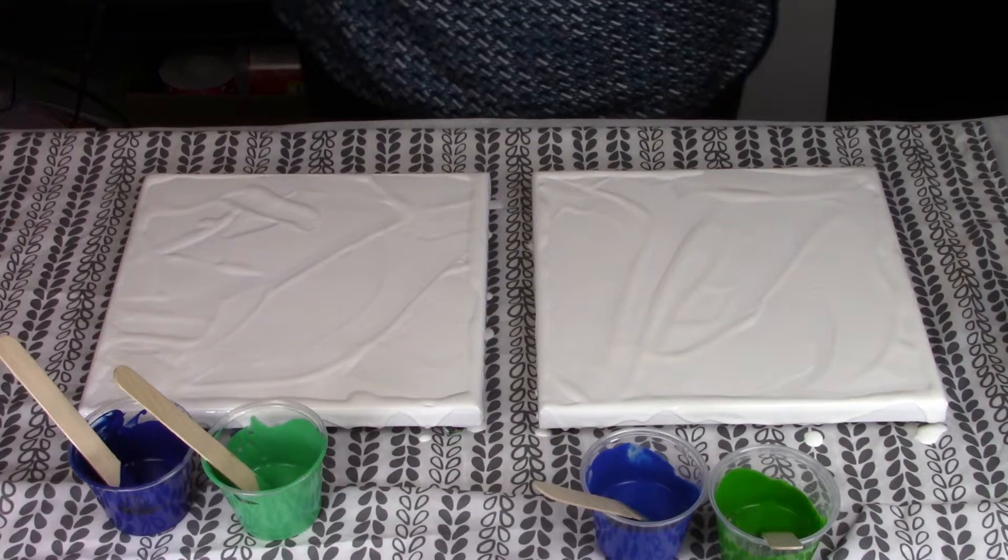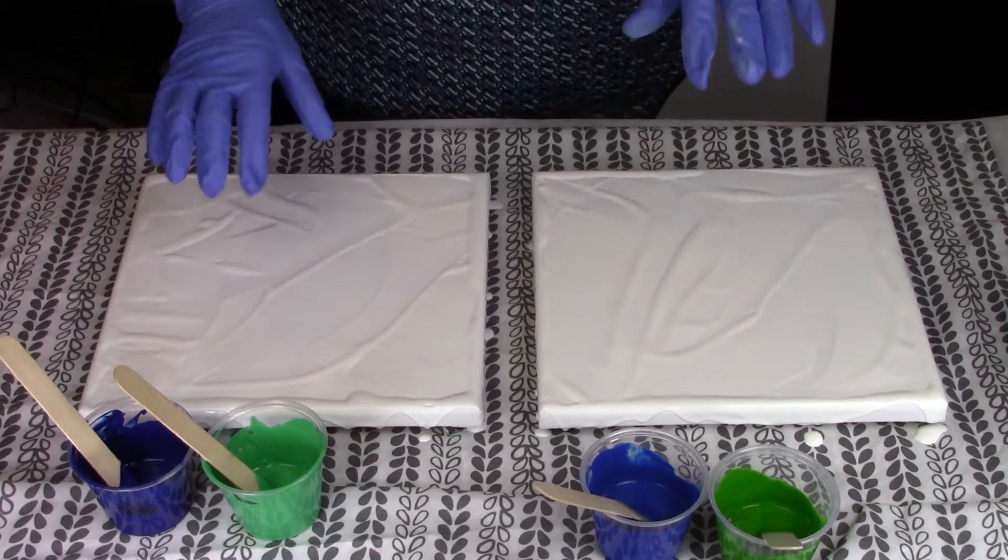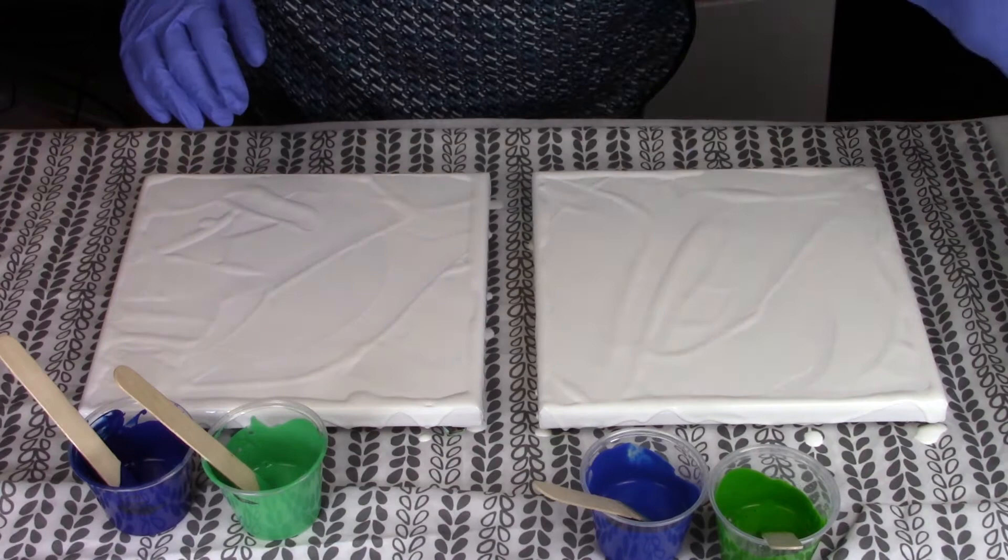So we're just going to do the Phthalo Blue, Emerald Green, one on each canvas, a little bit of white with silicone in it. I have it in this little bottle right here. And I'm just going to blow it out. We'll see how it looks.